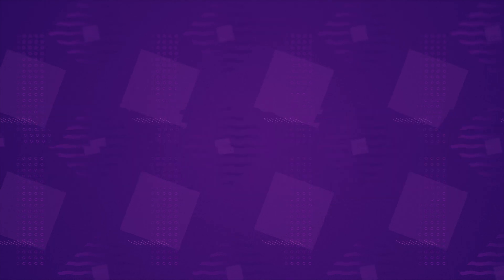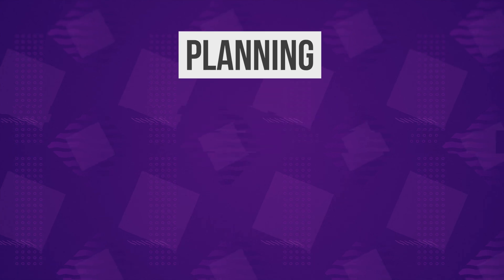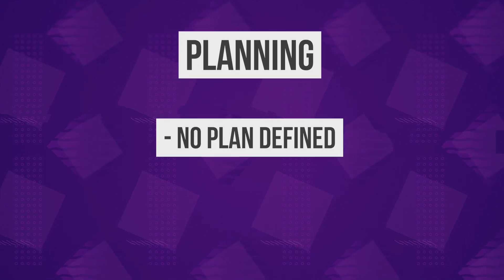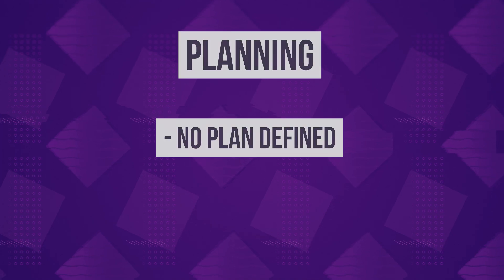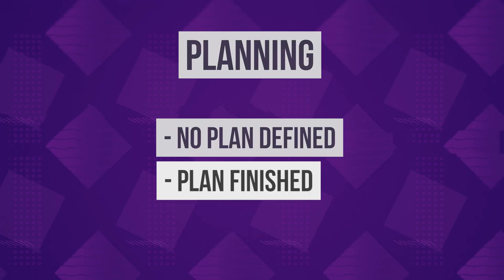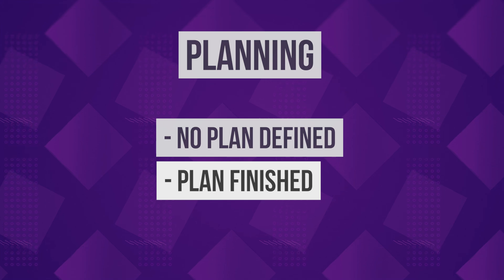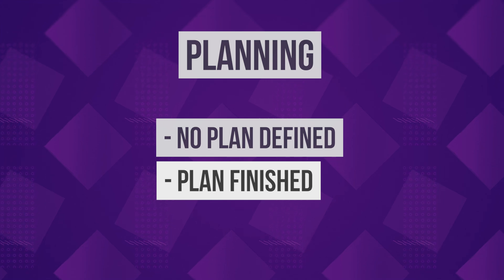That's it for the world state. Now let's talk about planning. There are three cases that will trigger planning: if there is no plan set, which will likely only happen when the agent is first created; if the current plan is complete, either finished or failed; and if there is a change in the world state.